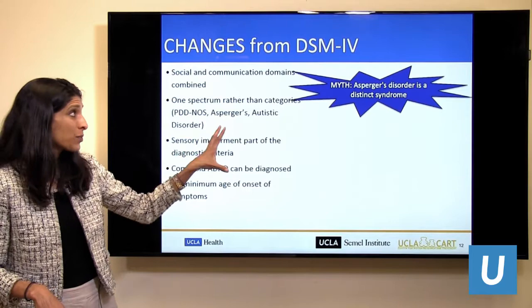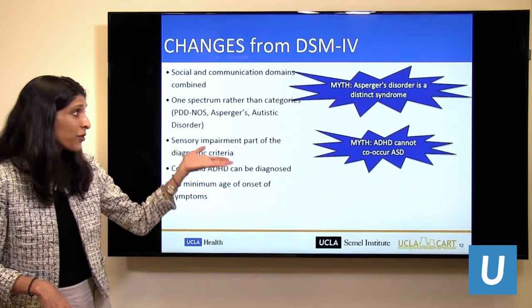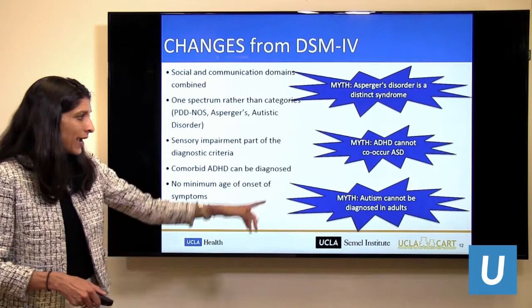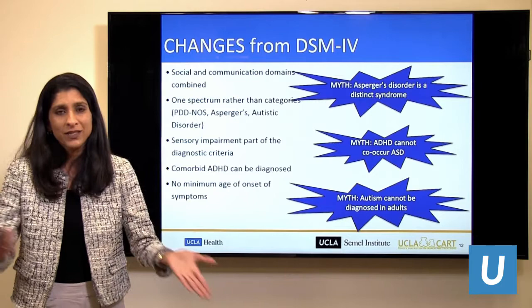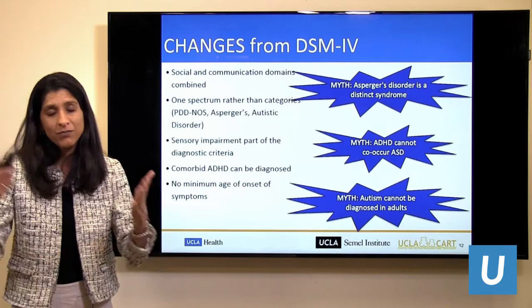This list busts a few myths. Asperger's disorder is not a distinct syndrome anymore. ADHD cannot co-occur with autism is also a myth — they overlap so much they should be diagnosed together. And the myth that you cannot diagnose autism in an adult because it's a developmental condition is also not true. Adults can be diagnosed; they often had symptoms in childhood that weren't recognized at the time.